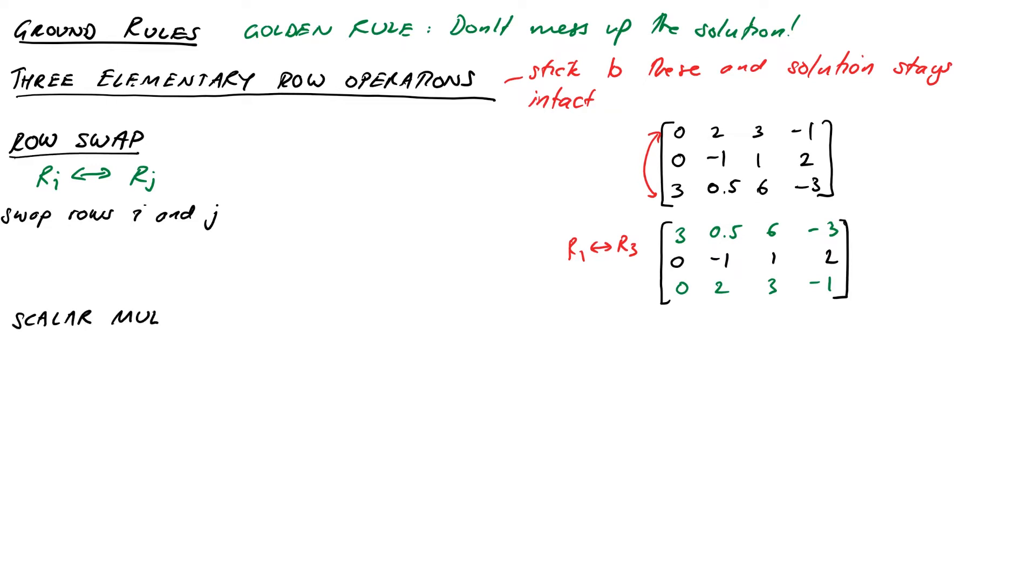The second of our three operations is scalar multiplication, where Ri → A×Ri for some non-zero A. This one multiplies row i with a non-zero scalar. For example, if we go back to our same system again, this time we're going to multiply row 1 by a third. Our matrix will become [1, 1/6, 2; -1, ...] and then the next two rows stay the same. So we multiply row 1 by a third to turn that 3 into a 1.